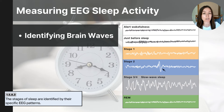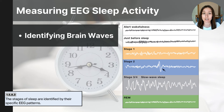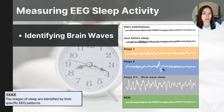The next brain wave depicted at the bottom of the diagram is REM sleep. You enter REM sleep for the first time about an hour after falling asleep. These REM waves are very short and rapid, and they resemble the waves you see when you are awake.